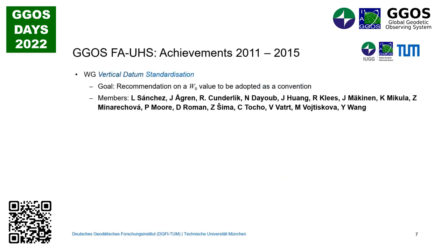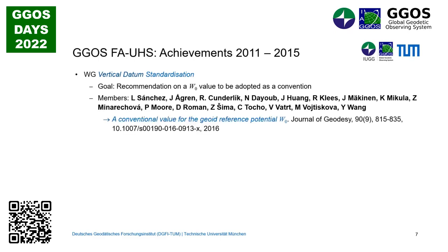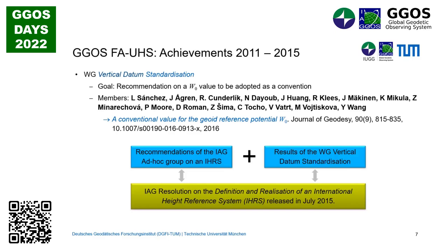To support this definition, we also needed to define a W0 value, and this was addressed by a working group of the focus area in IGOS called vertical datum standardization. We made a recommendation about a possible W0 value to be adopted as a convention for the IAG. The results are contained in the paper 'The Conventional Value for the Geoid Reference Potential'. Based on the recommendations of the ad hoc group and results of this vertical datum standardization, we compiled an IAG resolution on the definition and realization of the International Height Reference System.